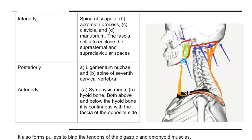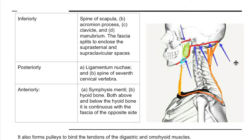Posteriorly, the investing layer is attached to the ligamentum nuchae, which extends from C1 to C6 vertebrae and the spine of the C7 vertebra. Anteriorly, it extends from the symphysis menti to the hyoid bone, and both above and below the hyoid bone it is continuous with the fascia of the opposite side. In this manner it completely forms a collar around the neck, and also forms pulleys to bind the tendons of the digastric and omohyoid muscles.